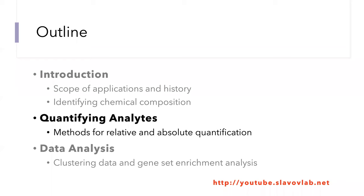Welcome to the second lecture of this series on mass spectrometry analysis. Today we'll discuss how to quantify analytes with mass spectrometry, and specifically how to quantify proteins — though many of the principles apply equally to other analytes such as metabolites. We'll start by discussing relative quantification of proteins, then towards the end discuss how to quantify proteins in absolute terms, in terms of number of molecules.